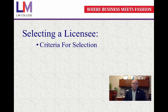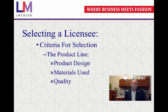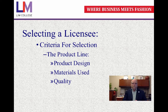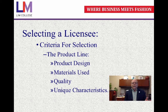So selecting some criteria for selecting a licensee — first, the product line itself. What is the product line? The product design, the materials used, the quality. If you want to select a licensee, you want to make sure that they put a good product out there. It's good quality, they use the proper materials, the design is right. You don't want terrible products manufactured by the licensee. Make sure the product line is top-notch and that any unique characteristics are being followed by that licensee.